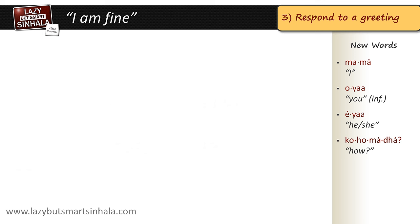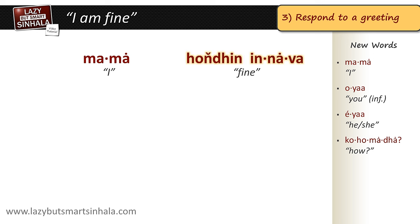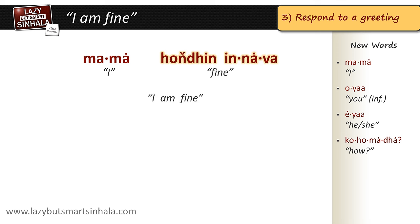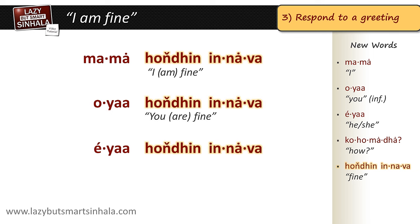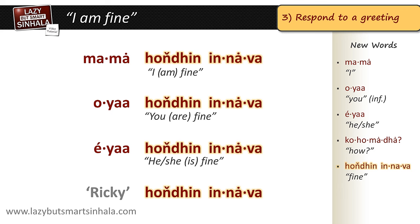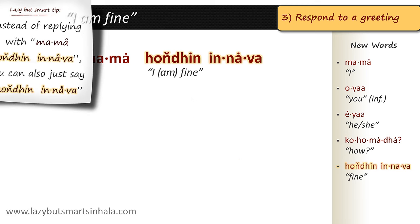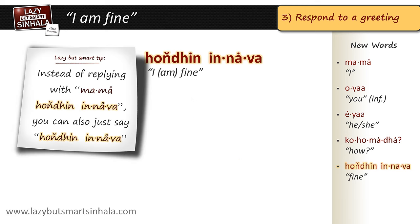Section 3: Responding to a Greeting — learning to say 'I'm fine.' You already know that the word for 'I' is mama. The equivalent of 'fine' is actually made up of two words: honding innova. Notice the joint pronunciation of the 'n' and 'd.' To say 'I am fine,' we simply join the two words: mama honding innova. Notice that the word 'am' is implied. Similarly, oyaa honding innova means 'you are fine,' ea honding innova means 'he or she is fine,' and Ricky honding innova means 'Ricky is fine.'